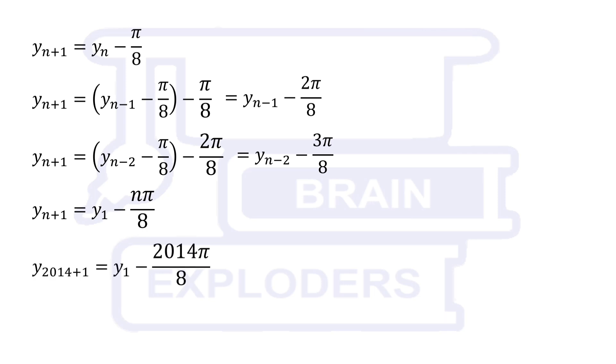Put n equals to 2014, we get y 2015 equals y1 minus 2014 pi over 8, or 1007 pi over 4. Add and subtract pi by 4.